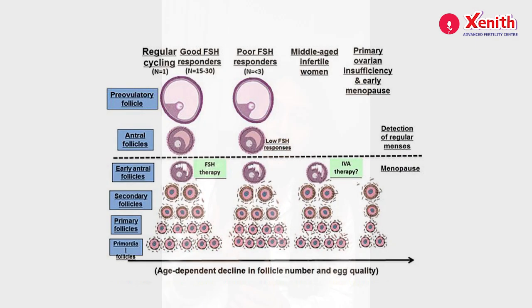So if a woman is born with a lesser number of eggs, or a lower ovarian reserve compared to normal, or if she is losing more eggs every month for whatever reason, she is going to have fewer eggs in her ovary than what we would expect as normal for her particular age.